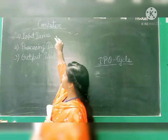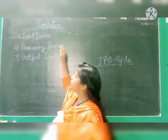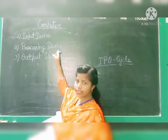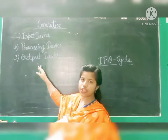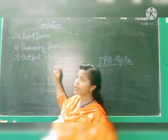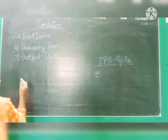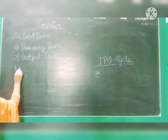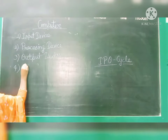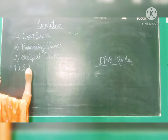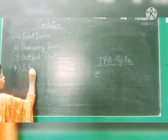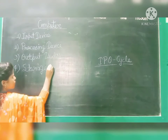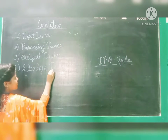Number one: input devices. Number two: processing device. Number three: output devices. Number four: storage devices.